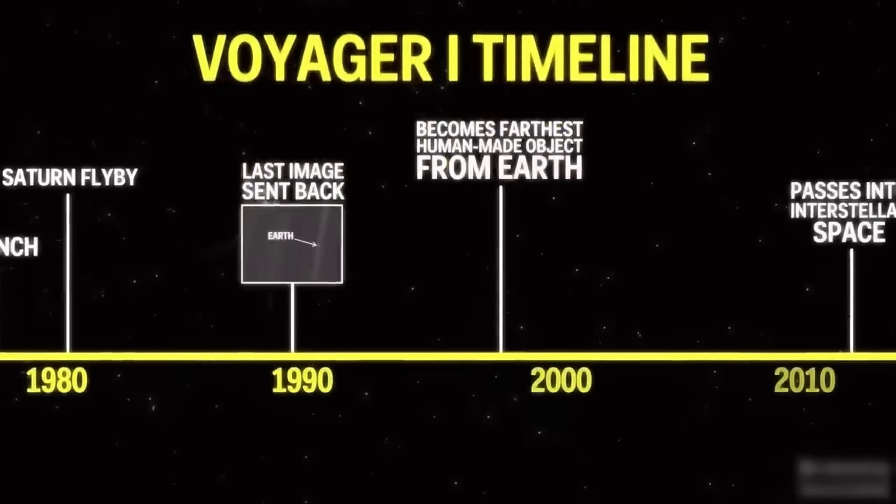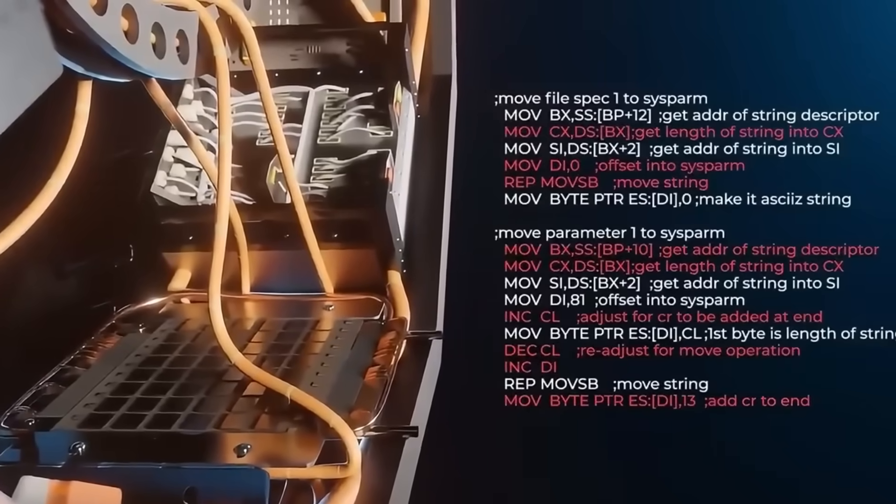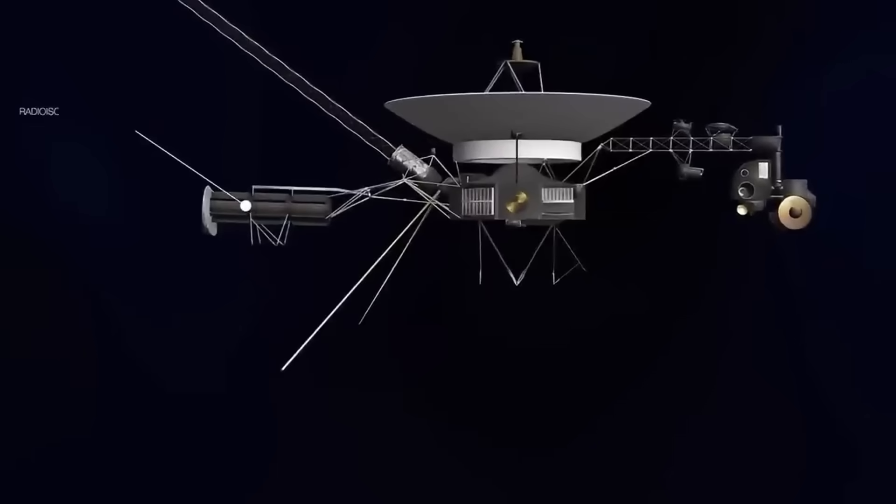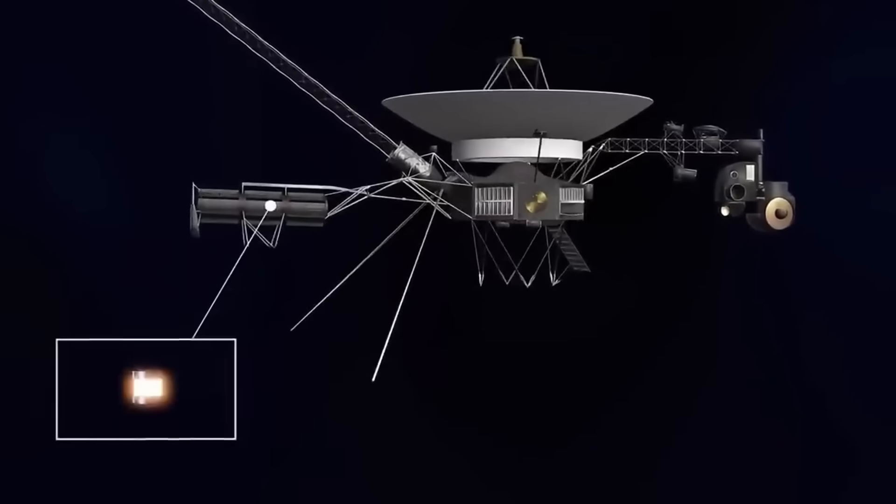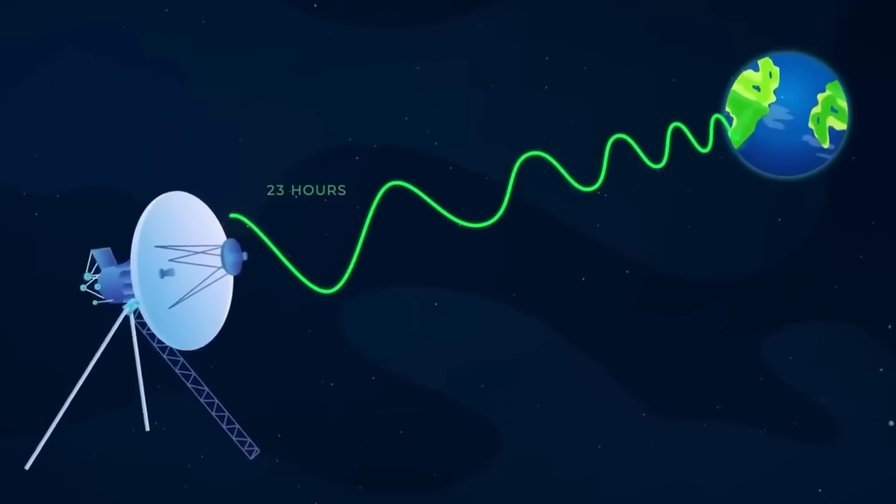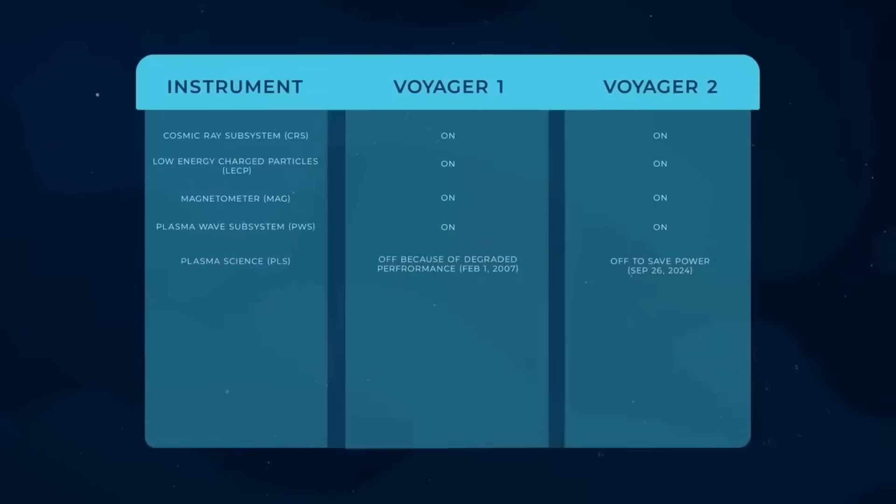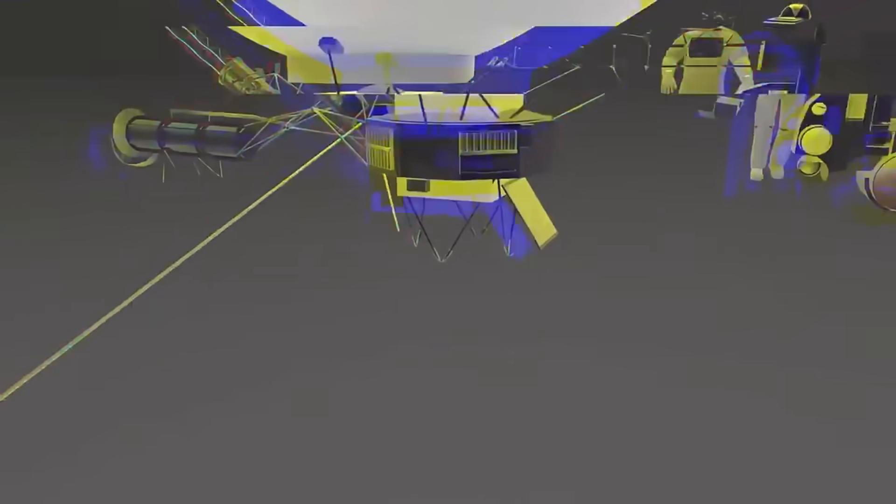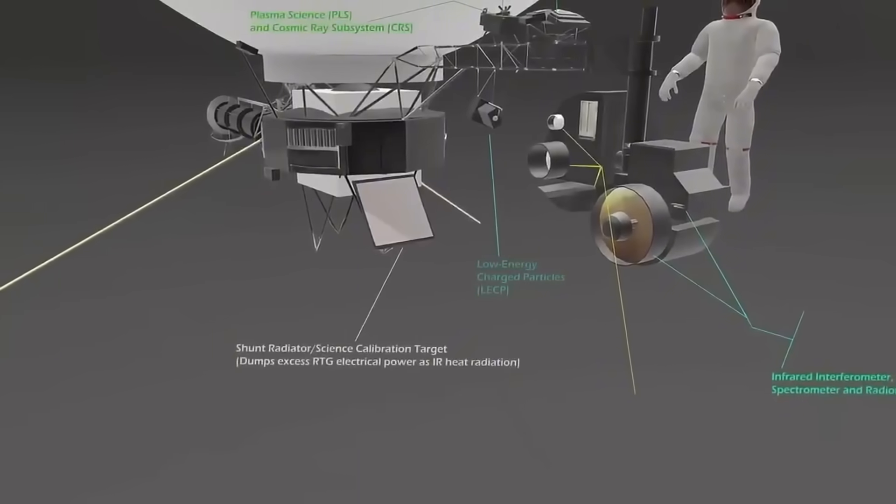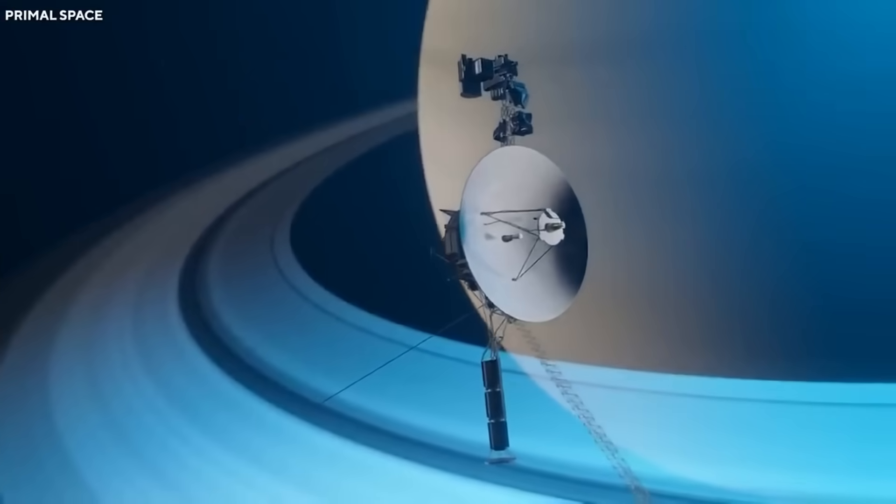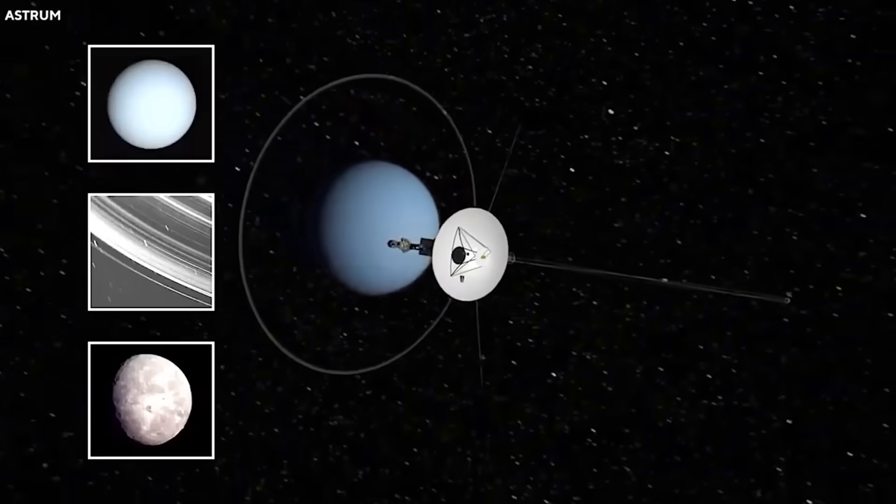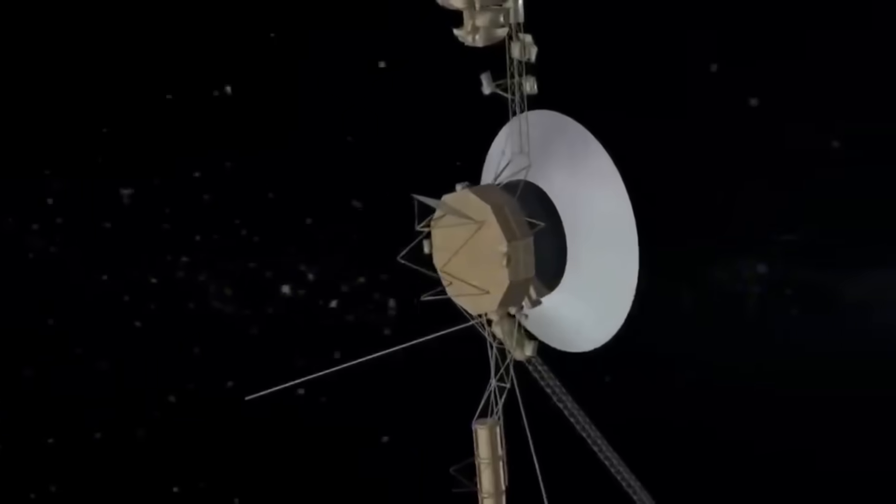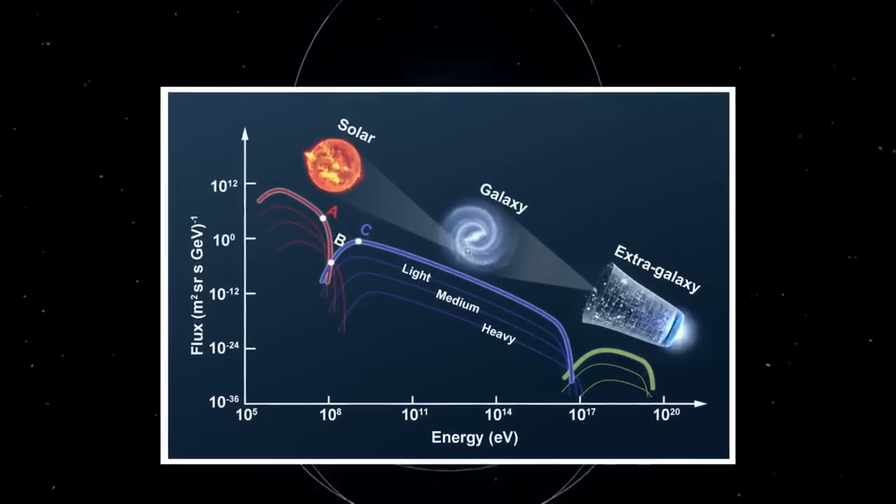The implications are extraordinary. The golden record contains 115 images, music from around the world, natural sounds, and greetings in 55 languages. It was humanity's time capsule to the stars. Now, decades later, quantum analysis shows patterns in Voyager's transmissions that mirror these recordings. The similarity defies simple explanation. This wasn't random noise, it looked like a message. A message with roots in what we sent out, but transformed by Voyager's journey through the void.